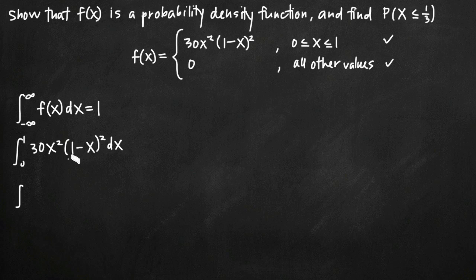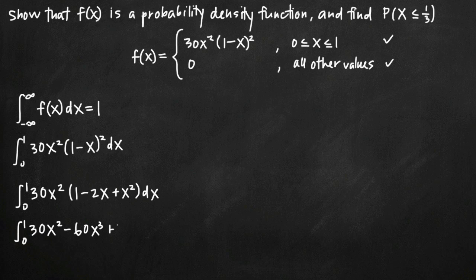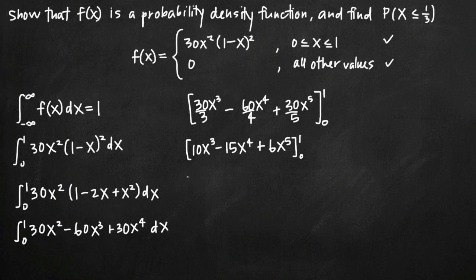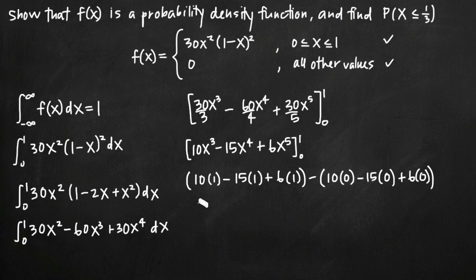We simplify the integral by multiplying out 1 minus x times 1 minus x and then distributing the 30x squared. Then we use the power rule to take the integral, simplify, and plug in our limits of integration. When we do the arithmetic, we get 10 minus 15 plus 6, which is equal to 1.